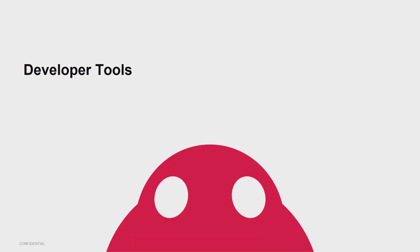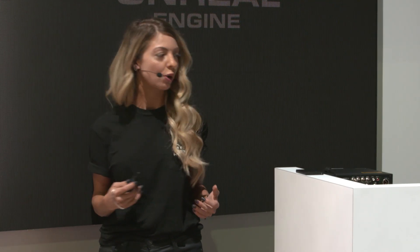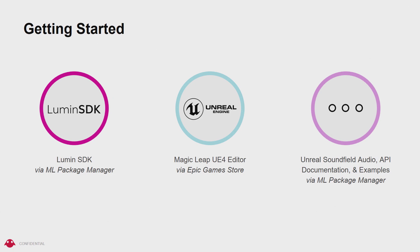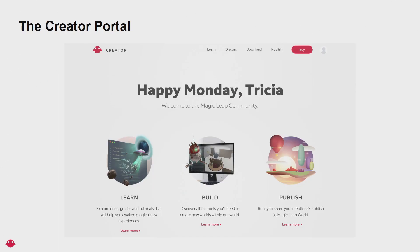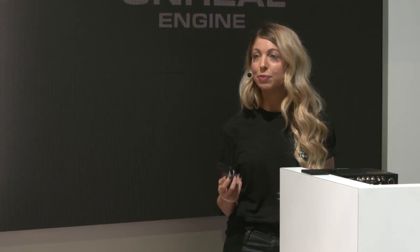For developer tools — if you're a creator, here's where you can go next. We've got three components with Unreal development. You've got the Lumen SDK, which gives you access to our APIs and features, downloadable via the Magic Leap package manager. You've got the Magic Leap UE4 editor build on the Epic Games Store. You also have access to Unreal SoundCloud audio, API documentation, and examples in our package manager. You can get this at creator.magicleap.com, which gives you access to our creator portal, APIs, docs, guides, tutorials, build tools, and publishing tools.